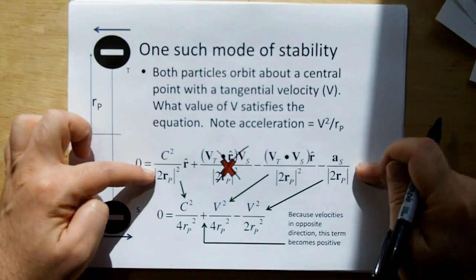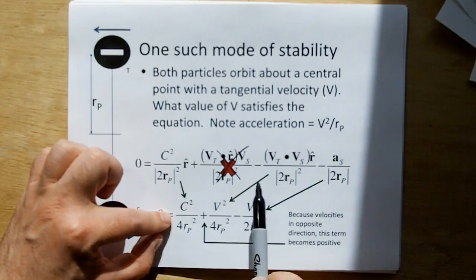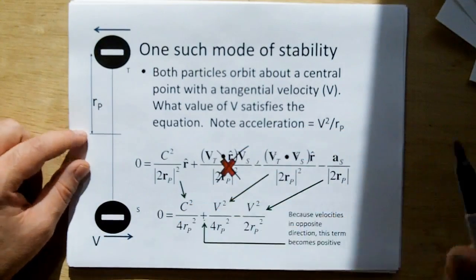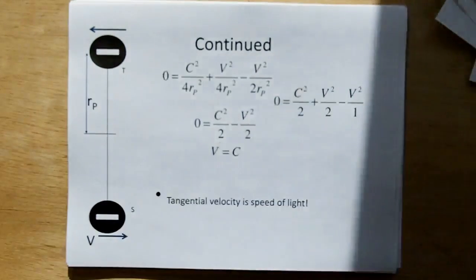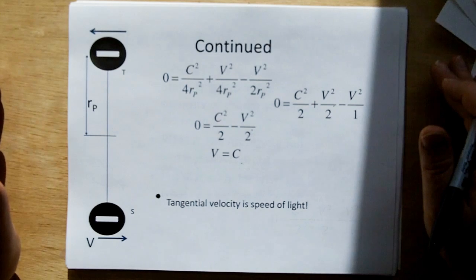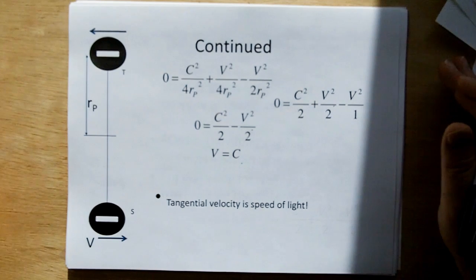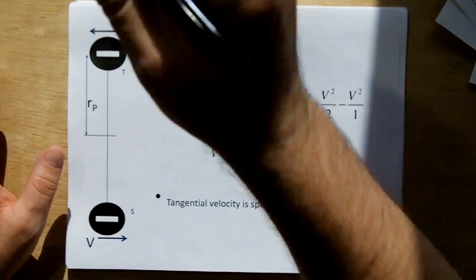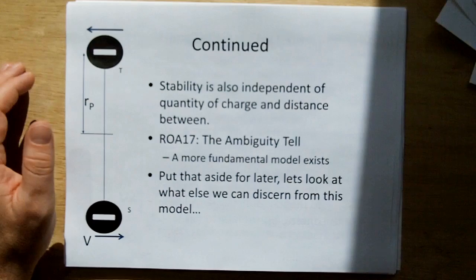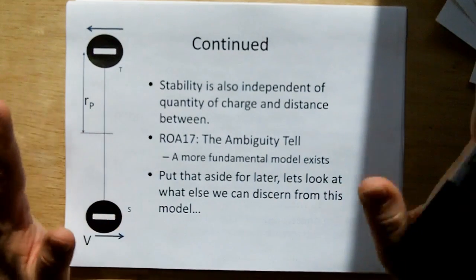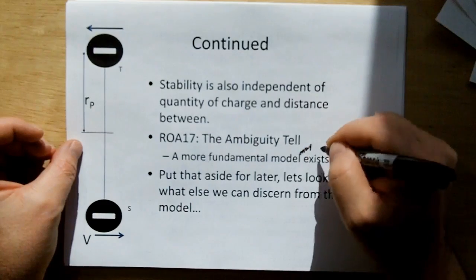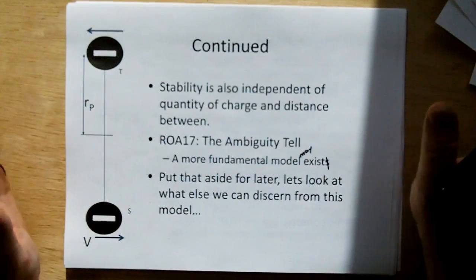Well, since the tangential velocity is never moving in direction of R, this term goes to zero and we're left with these three. And then this can be reduced. Now you have to remember here, this sign goes from negative to positive because these tangential velocities are in opposite directions. So there's a minus sign with this dot product which cancels this minus sign, and that's why it becomes positive here. So that reduces here. And then we reduce, reduce, reduce, reduce, and we find out that when the pretons hit the speed of light, the system, all the forces cancel on this system. Now since they're inertialess, there's no need for them to have centripetal inertia to fly off into space. They're completely inertialess. Also, stability is independent of the quantity of charge and the distance between. And Rule of Acquisition 17 tells us the ambiguity tells that a more fundamental model may exist. But let's put that aside and let's see what else we can discern from this model.